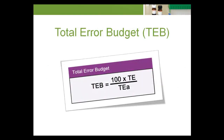The total error budget, TEB, is a quantity that relates the laboratory's test system process capability, TE, to the laboratory's quality requirement, TEA. TEB equals 100 times TE divided by TEA. TEB reflects the percentage of the TEA in patient results that is consumed by the laboratory's inherent test system imprecision and bias. How large can TEB be before a lab should be concerned that its test system capability is not well aligned with its quality goals?